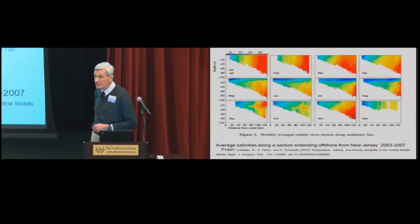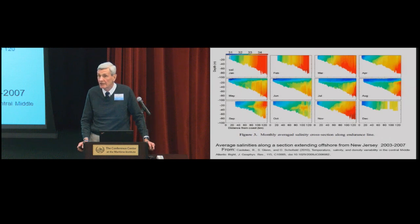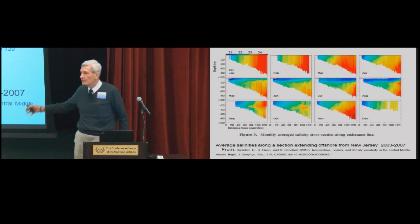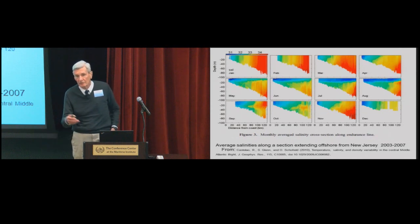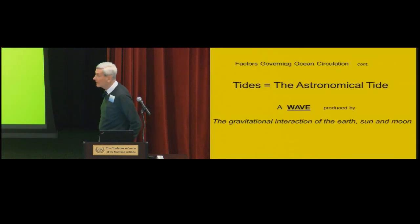This just tells you that there's a seasonality in the temperature salinity field offshore New York. This is a section off New Jersey, and the flow velocities generally on the order of 20 centimeters a second or so. So density, don't generally have to worry about it as a sailor.